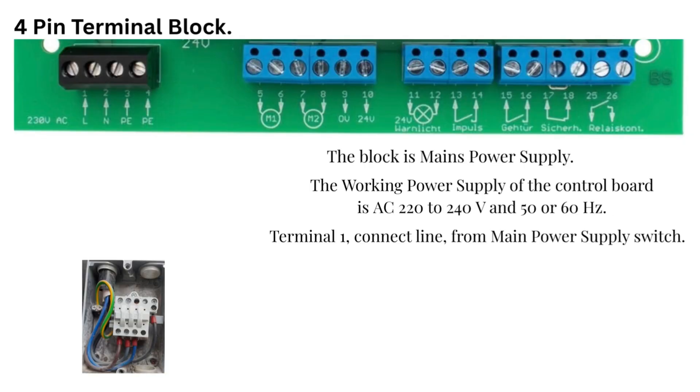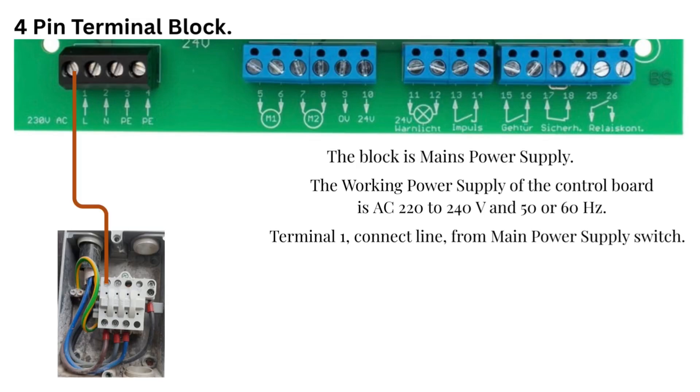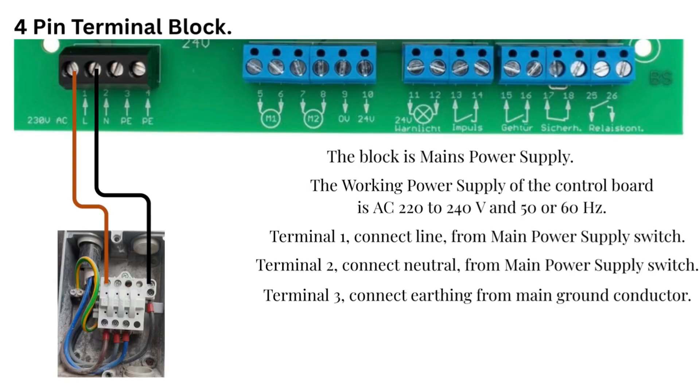Terminal 1 connects line from main power supply switch. Terminal 2 connects neutral from main power supply switch. Terminal 3 connects earthing from main ground conductor. Permissible cable cross-section is 1.5 mm to 2.5 mm square.